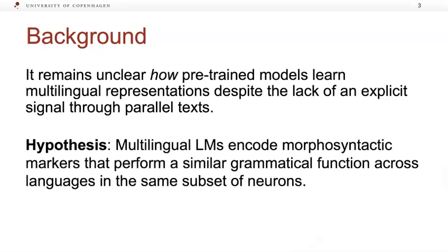We hypothesize that multilingual language models implicitly align morphosyntactic markers that fulfill a similar grammatical function across languages by encoding them in the same subset of neurons, even in absence of any lexical overlap.